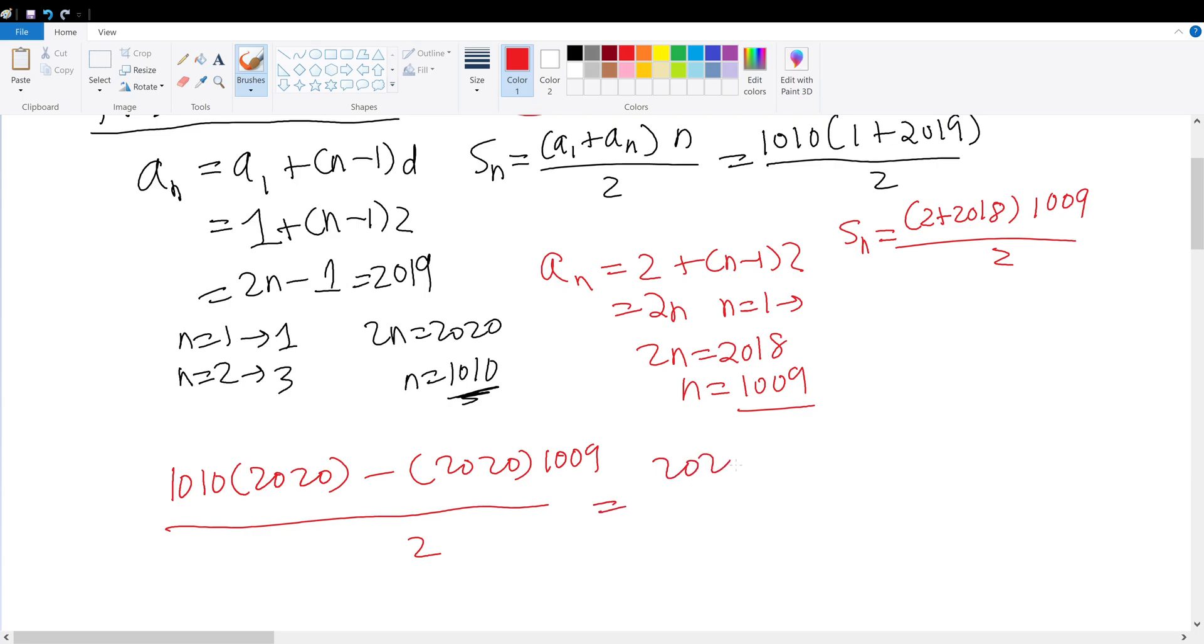You can factor out 2020, and we will get 1010 minus 1009, which gives 1 divided by 2 gives 1010. So your final answer would be answer choice E.